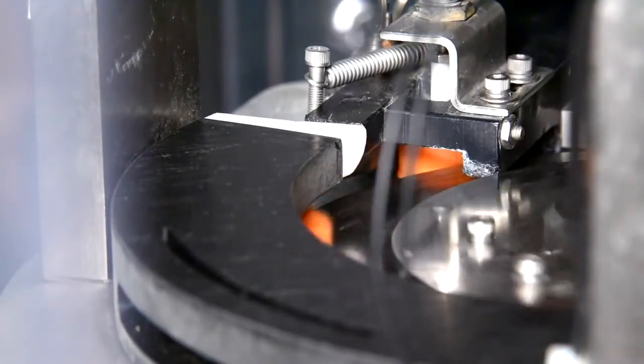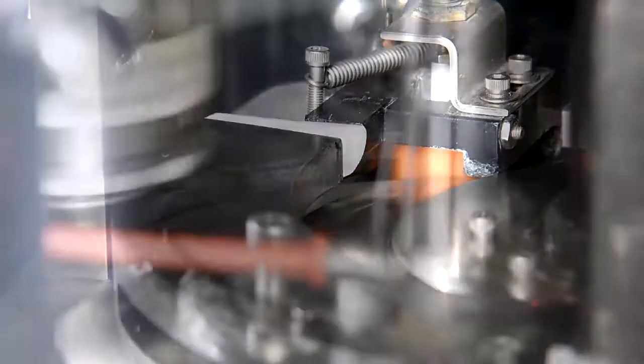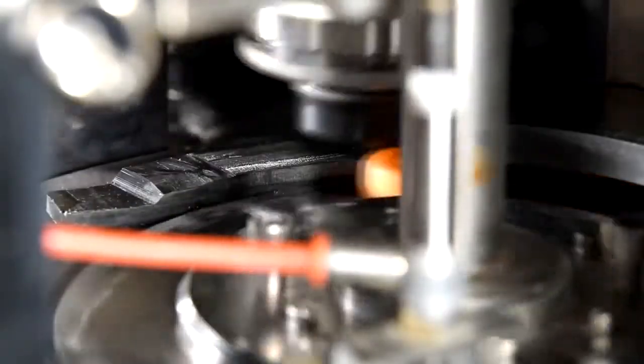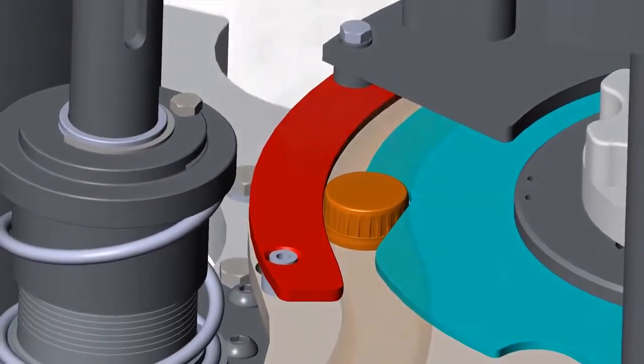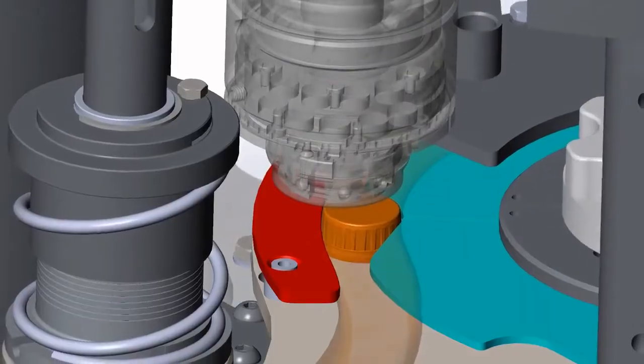The star wheel spaces the caps out and positions them under the capping chuck which is attached to the capping headset. A guide on the outside of the star wheel keeps the caps in the pocket of the star until the capping chuck takes control of the bottle cap.